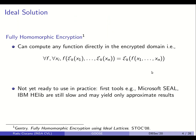In this kind of problem setting, the ideal solution would be fully homomorphic encryption, which allows computing any function directly in the encrypted domain. Formally, for any function f and any input, applying the function on the encryption of the input gives the encrypted result. From the theoretical point of view, this problem was solved 12 years ago by Gentry, but in practice, tools like Microsoft SEAL or IBM HElib are still slow and may yield only approximate results, so they are not ready for our problem of secure SPARQL evaluation.